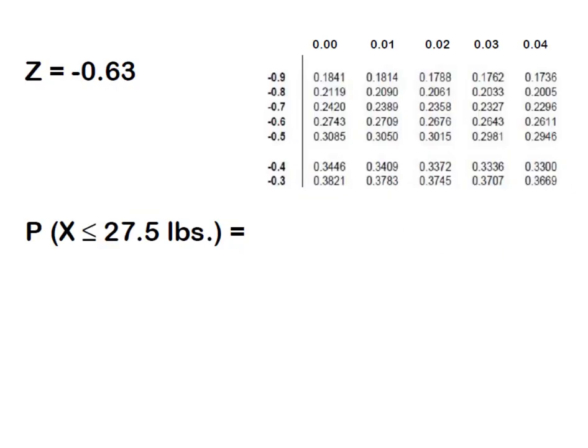So I have an excerpt from our normal distribution chart and we're going to look for negative 0.63. So we'll start with our negative 0.6. We're going to come across that row until it intersects with the column of 0.03. Now we know the area to the left of a negative z of 0.63 is 0.2643 or 26.43 percent.